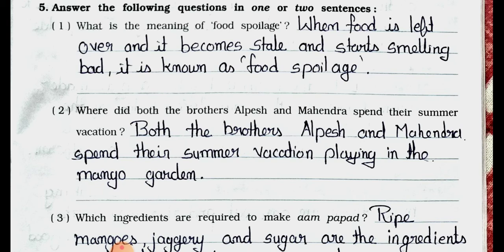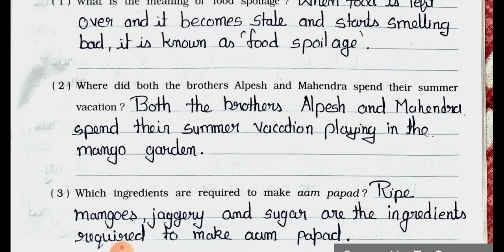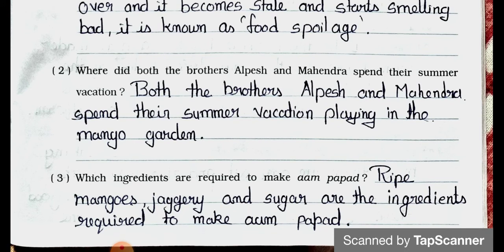Question 3: Which ingredients are required to make aam papad? Answer: Ripe mangoes, jaggery, and sugar are the ingredients required to make aam papad.